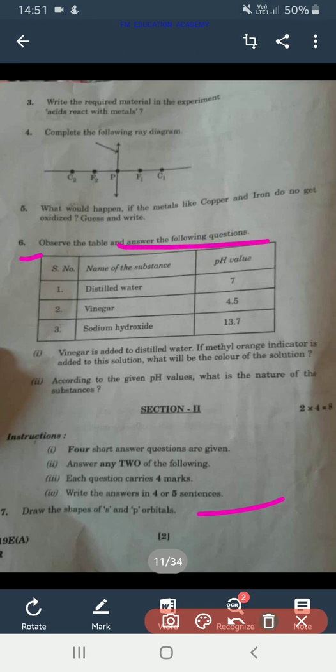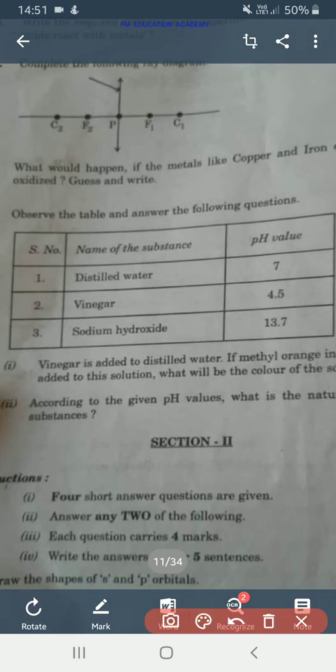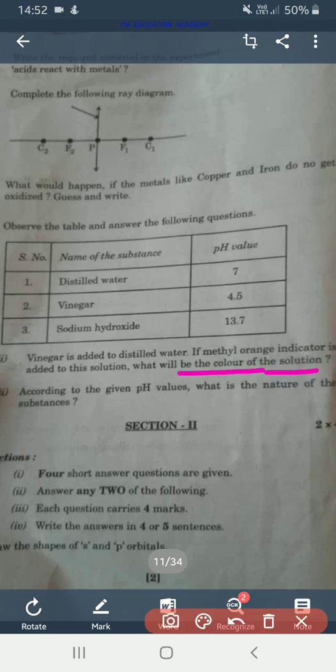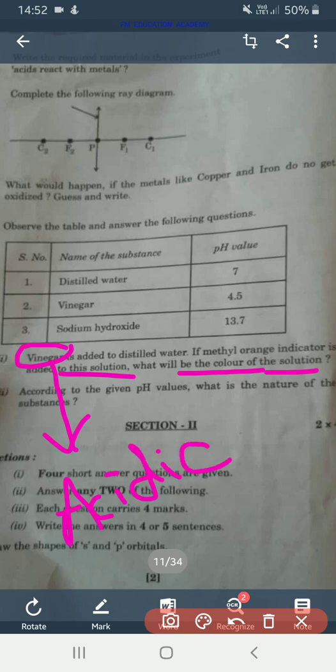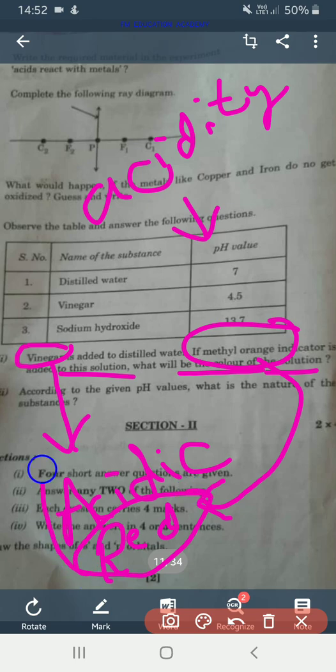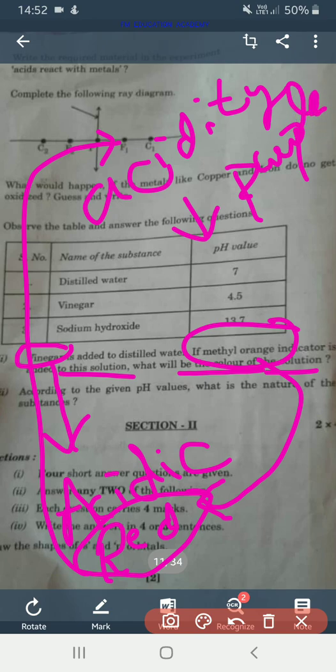Sixth question, observe the following table and answer the following questions. Name of the substance and pH value is given. Distilled water pH is 7, vinegar pH 4.5, sodium hydroxide pH 13.7. Question first is, vinegar is added to distilled water. If methyl orange indicator is added to the solution, what will be the color of the solution? For writing this answer, you should know vinegar is which substance? Is it acidic or basic? Vinegar is acidic substance and whenever we add methyl orange indicator to acidic substance, the acidity of the substance decreases.